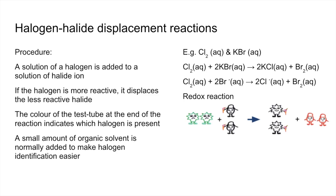There's a cartoon to illustrate what's happening. The more reactive halogen — chlorine — consists of two chlorine atoms covalently bonded. The two separate bromide ions each have an electron. Because chlorine is more reactive, with a smaller atomic radius and less shielding, it has greater attraction for the electron. It pulls the electron off the bromide ion; the chlorine atoms become chloride ions, and the two bromine atoms covalently bond to form the diatomic bromine molecule.